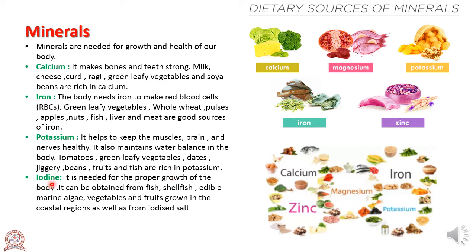The last mineral is iodine. It is needed for the proper growth of the body and can be obtained from fish, shellfish, edible marine algae, vegetables and fruits grown in coastal regions, as well as from iodized salt. So these are the four minerals: calcium, iron, potassium, and iodine.